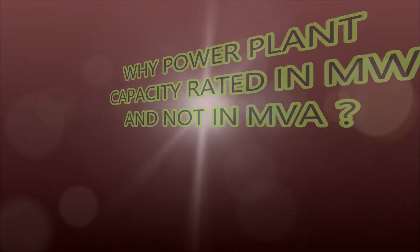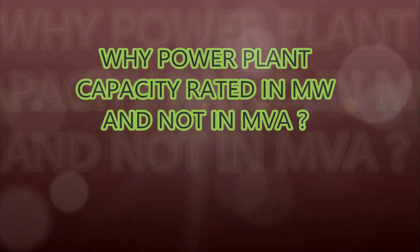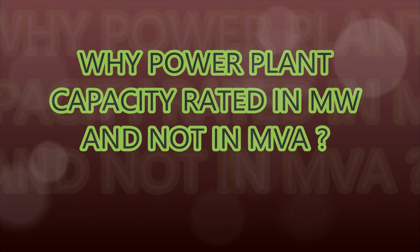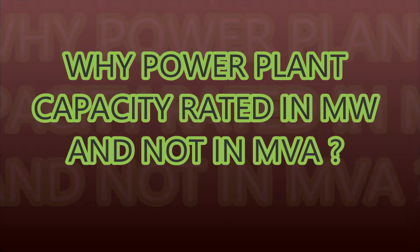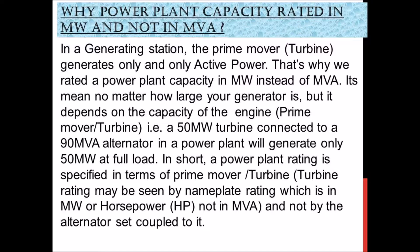Welcome to my channel. Today we discuss why power plant capacity is rated in MW and not in MVA. In a generating station, the prime mover turbine generates only active power. That's why we rate a power plant capacity in MW instead of MVA.